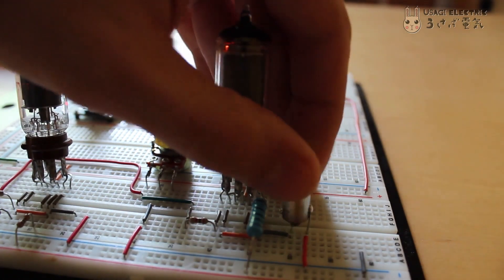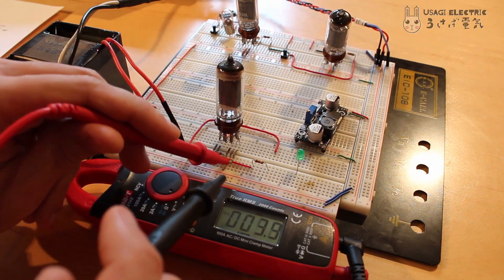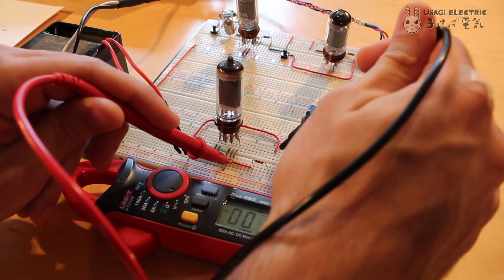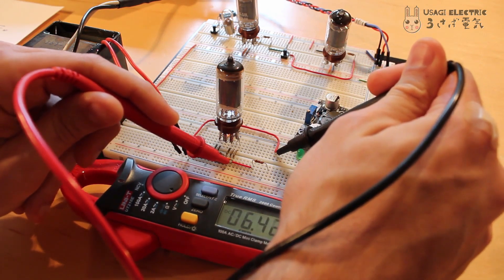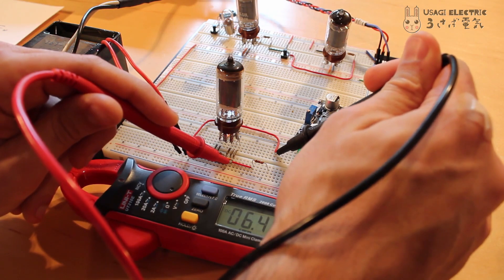Because thyrotrons can move a lot of current, they are also ideal for rectifying AC into DC. Here we can see that same 2D21 thyrotron rectifying the AC from the transformer to 6 volts DC.